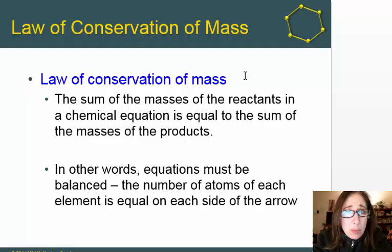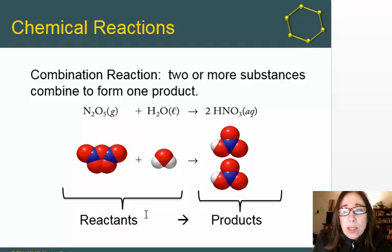What that means is equations must be balanced. The number of atoms for each element must be the same on each side of the arrow. If we go back to that original chemical equation, we see it is balanced. Two nitrogens on the left, two nitrogens on the right. Six oxygens total on the left, six oxygens on the right. Two hydrogens on each side.